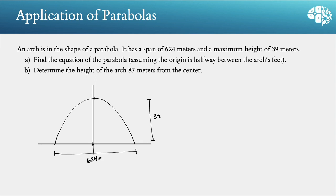So drawing it like this, we have a couple of things. First of all, we have the vertex. You know that the vertex is at the point 0,39. And then we've got this point over here. That's going to be half of this 624 meter distance, so that's 312. And the y-coordinate there is 0.